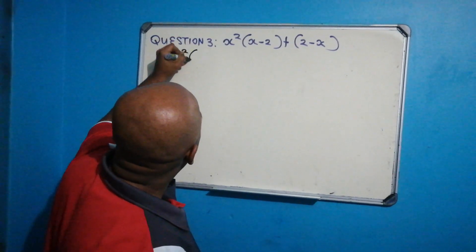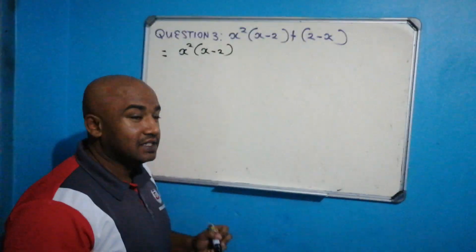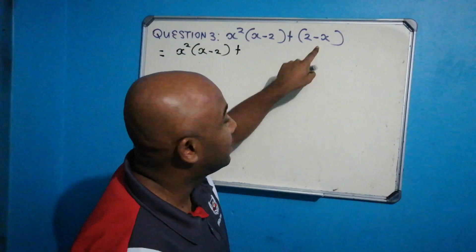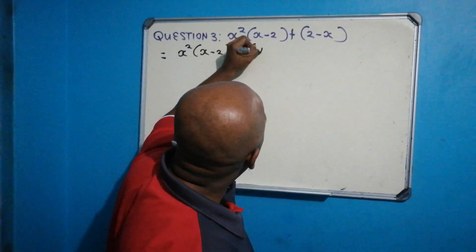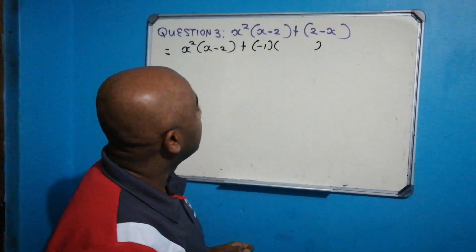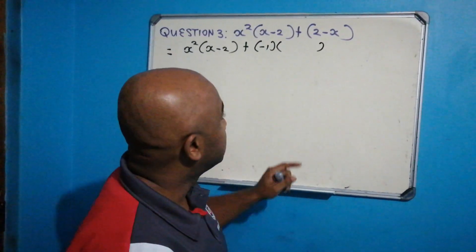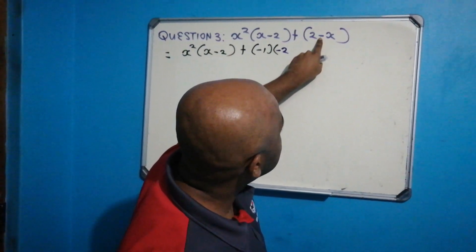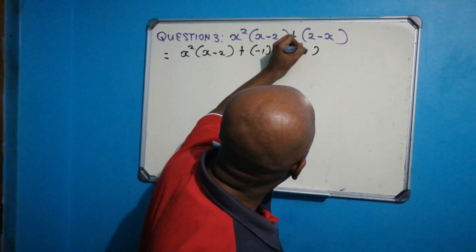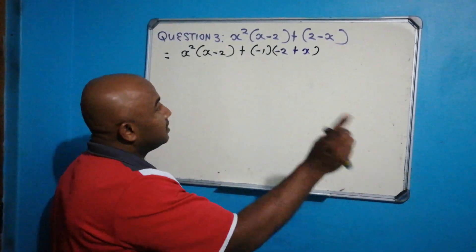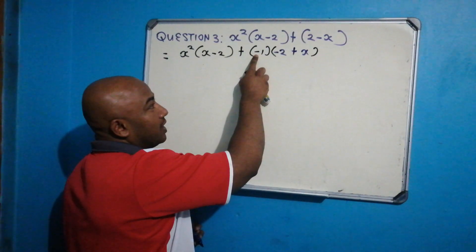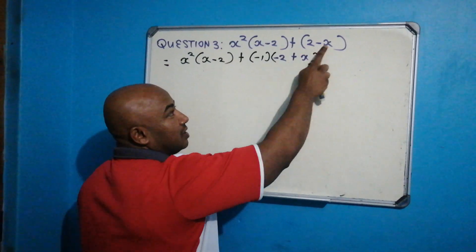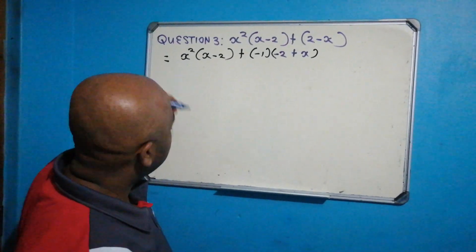Here we have x squared times x minus 2 — leaving it as it is. The trick is to take out negative 1 as a common factor from the second term. If I pull out negative 1 as a common factor, the signs will change: originally plus 2 becomes minus 2, and minus x becomes plus x. You must check each step — negative 1 times negative 2 is positive 2, and negative 1 times positive x is negative x.